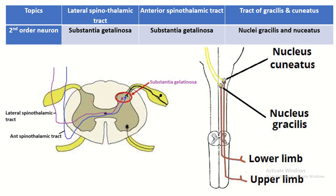This pseudo-unipolar neuron is the first order neuron for all three tracts. This is the cross-section of the spinal cord — this is the inner H-shaped gray matter, this is the posterior horn. The nerve cell bodies of neurons present here form a group known as the substantia gelatinosa. So the central process of the pseudo-unipolar neuron present within the dorsal root ganglia synapses with the nerve cell body present within the substantia gelatinosa. So the second order neuron is present within the substantia gelatinosa in the case of the lateral spinothalamic tract and anterior spinothalamic tract.